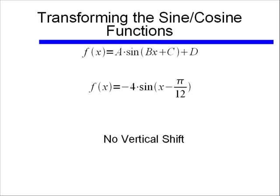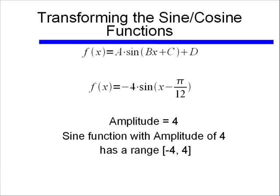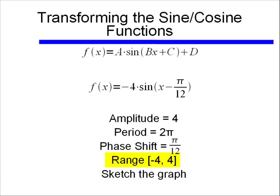However, we do have an amplitude that's not just equal to 1. So our sine function, instead of going from negative 1 to positive 1, because we're multiplying our sine by the number 4, it's now going to have a range of negative 4 to positive 4. So that's the range of this function.